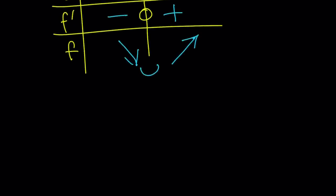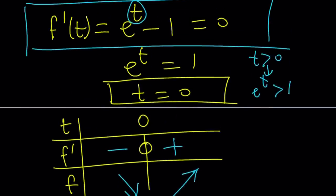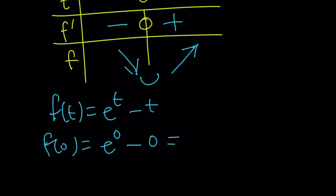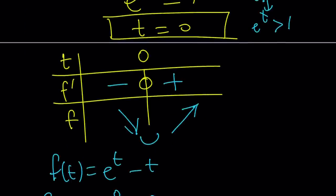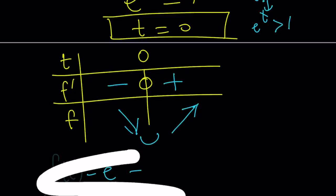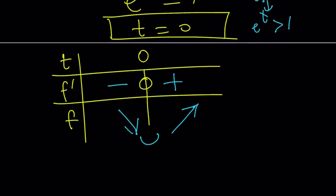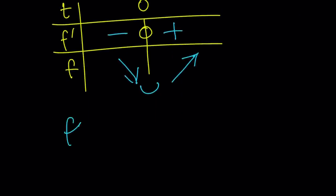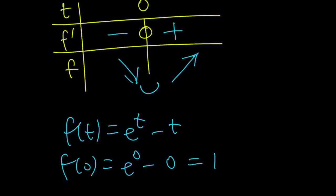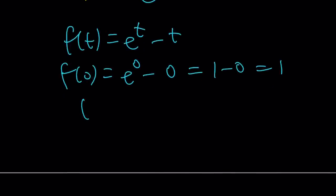Which means it has a minimum at 0. The derivative at 0 is 0. But if I evaluate the function f of t, which is e to the t minus t at 0, you get e to the power 0 minus 0, which is 1 minus 0. And that will be 1. So 0, 1 is going to be a minimum.